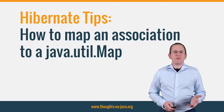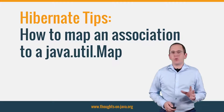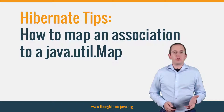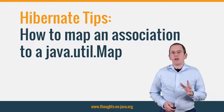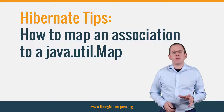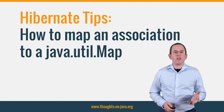Hi, I'm Thorben Janssen from ThoughtsOnJava.org with the new Hibernate Tip. The most common mappings of a to-many association use a list or a set. But sometimes you could implement your business logic much easier if you would map the association to a java.util.Map.